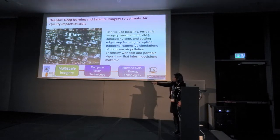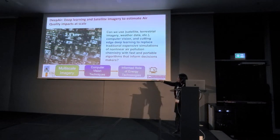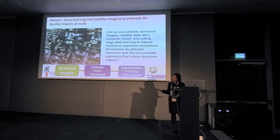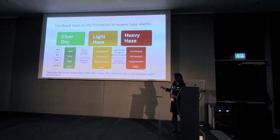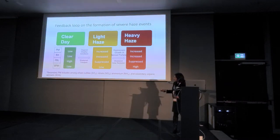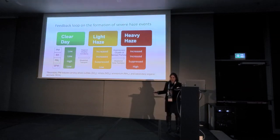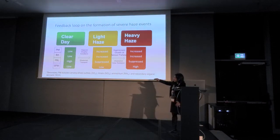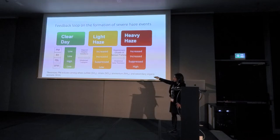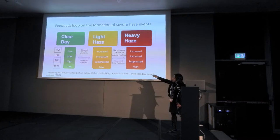Our project is called Deep Air, and our idea was to use multi-scale imagery and computer vision. When you enter into a topic, there is the domain expertise and the layers that matter. In the story: you have relative humidity, planetary boundary layer, and that affects the particulate matter — that is what we try to predict — and the secondary particle matter.